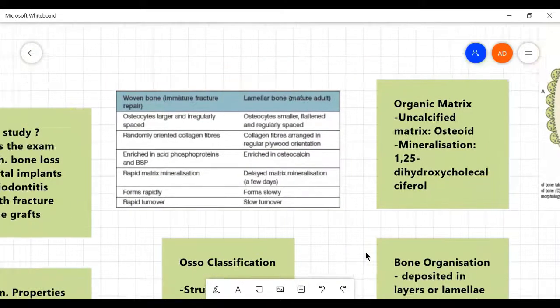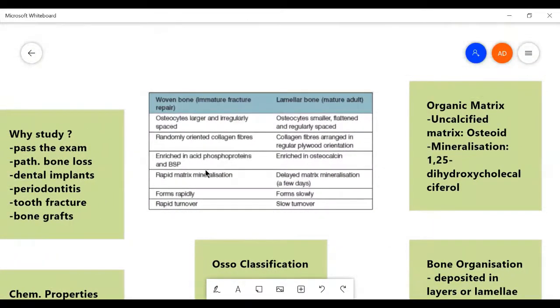The difference between woven and lamellar bone is that in woven bone, it is much less dense and it forms rapidly. It has a very rapid turnover rate. It is rich in acid phosphates and BSP. It has randomly oriented collagen fibers and osteocytes are larger and irregularly spaced.